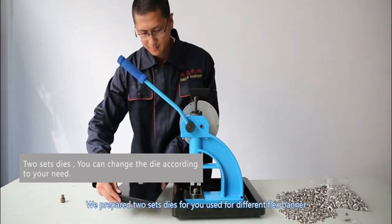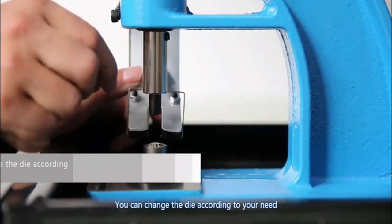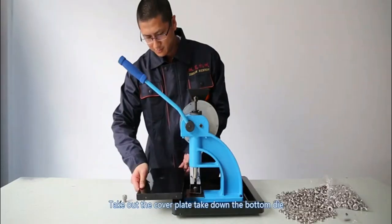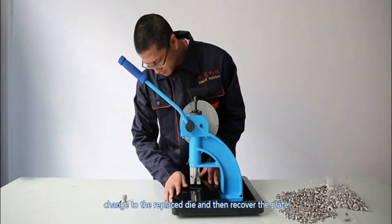We prepared two sets of dies for you, used for different flex banner. You can change the die according to your need. Take out the cover plate, take down the bottom die, change to the replaced die, and then recover the plate.